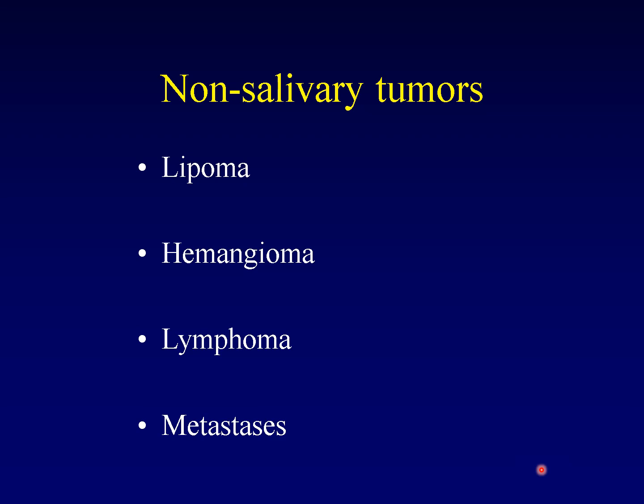Not every mass that arises within the salivary glands is of salivary origin. There are non-salivary tumors that commonly arise within the salivary glands. Lipomas are relatively frequent. Vascular malformations, sometimes called hemangiomas, are frequent. Lymphoma can affect the parotid gland — remember that the parotid gland is the only one with lymph nodes, so that is unique to the parotid gland. Metastatic disease can also affect the parotid gland, typically squamous cell carcinoma from the scalp or face spreading to the parotid nodes, but occasionally nodes from random locations such as pelvic primaries can result in parotid lesions.